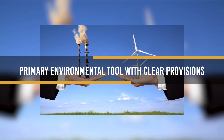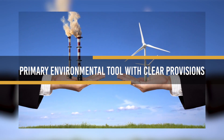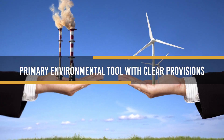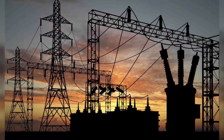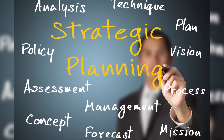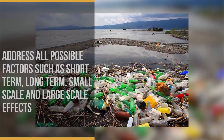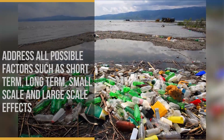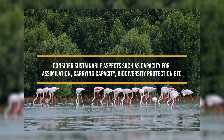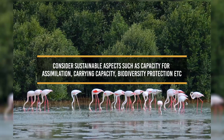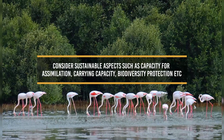Functions of EIA: to serve as a primary environmental tool with clear provisions; apply consistently to all proposals with potential environmental impacts; use scientific practice and suggest strategies for mitigation; address all possible factors such as short-term, long-term, small-scale, and large-scale effects to the environment; consider sustainable aspects such as capacity for assimilation, carrying capacity, and biodiversity protection.